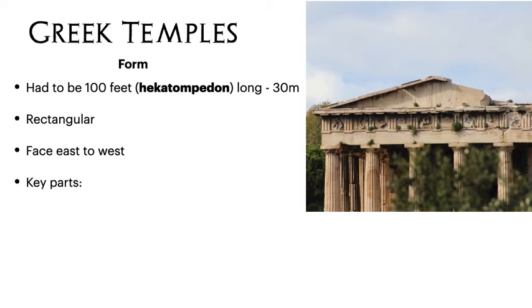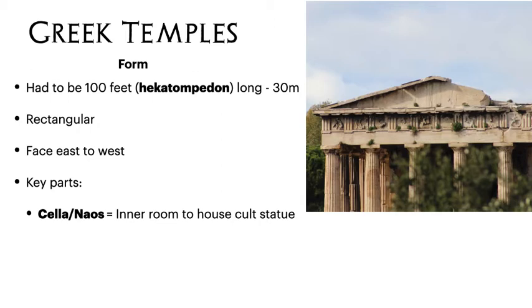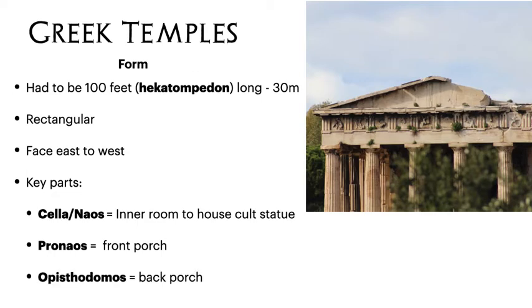As we've already learned, they had three key parts. The cella, which is the Latin name, or the naos, which is the Greek name, is the inner room, and this is where the cult statue to the temple's patron god or goddess would be housed. In front of that there would be the pronaos, or the front porch, which was a covered but open area. And then, because they liked symmetry, there would also be at the opposite end the epistodomos, or the back porch. So those were the three main parts of a Greek temple, but they would be laid out slightly differently depending on different styles.